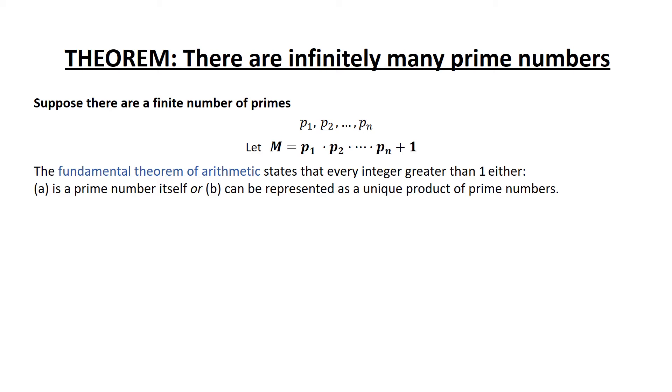In case 1, m is itself a prime number, in which case m is a prime number in addition to our initial list of primes p1, p2, p3, etc, pn.